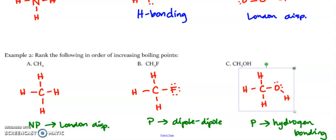Now let's rank them — increasing, so lowest to highest boiling point. The weakest force has the lowest boiling point: that's London dispersion, so CH4 is first. The highest boiling point goes to hydrogen bonding, so CH3OH is third. Dipole-dipole is in the middle, so CH3F is second. Those are intermolecular forces, and we will do some more examples and practice in class.